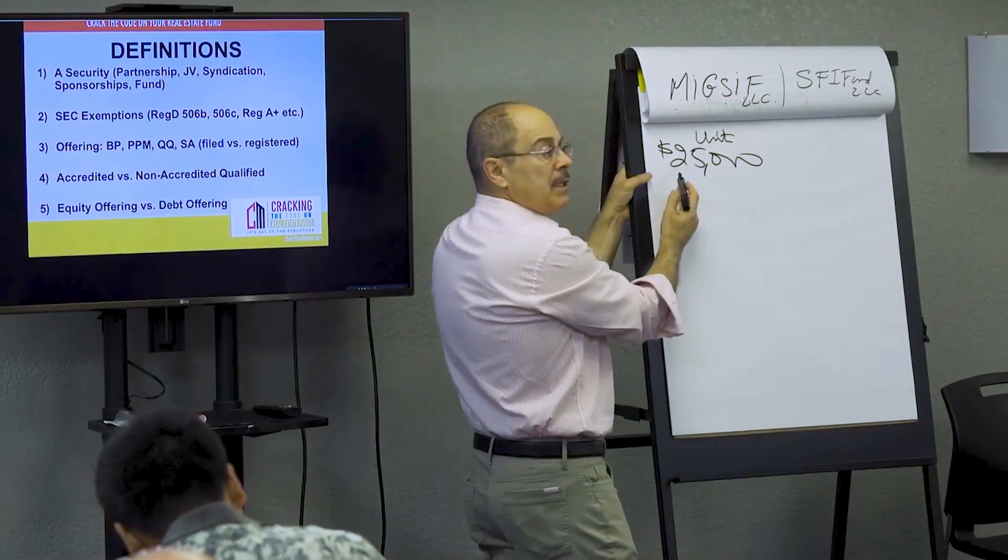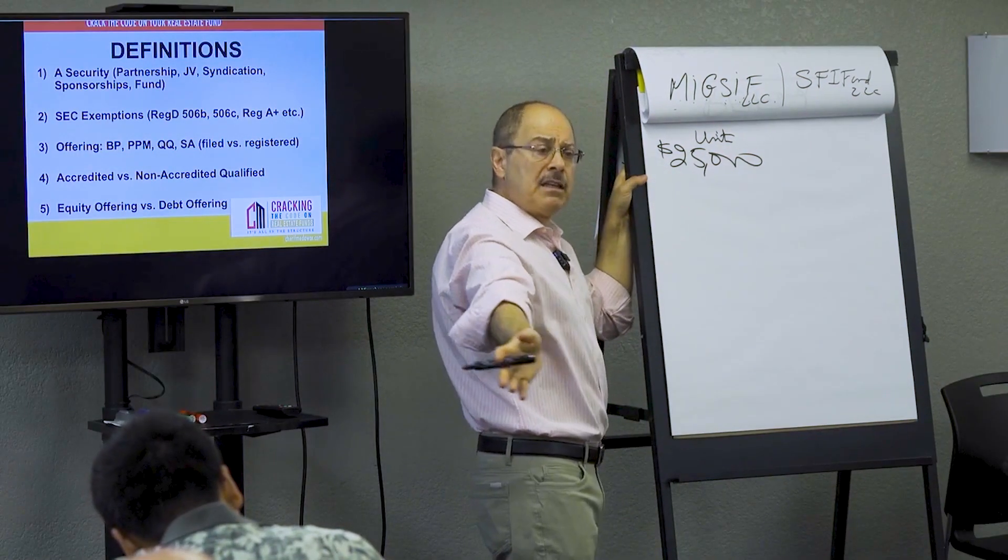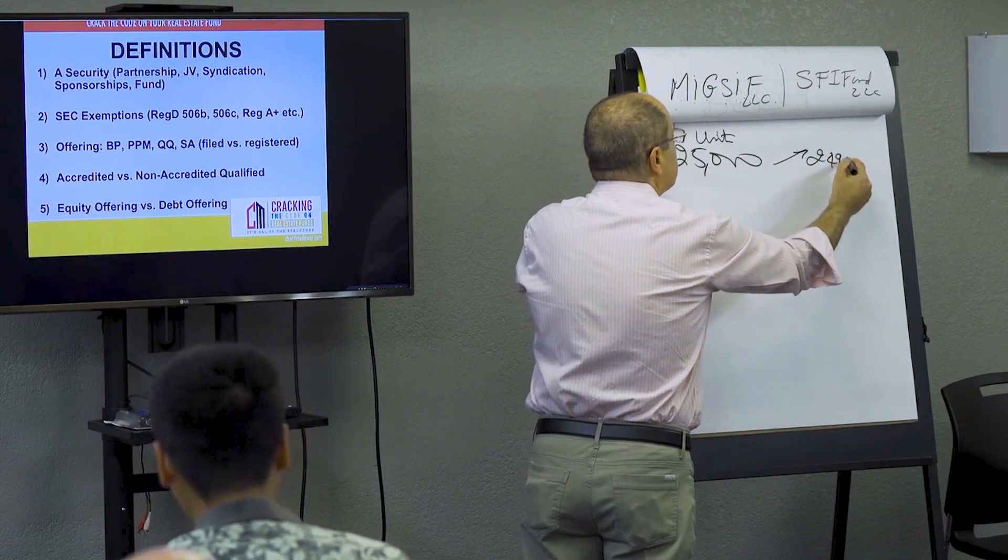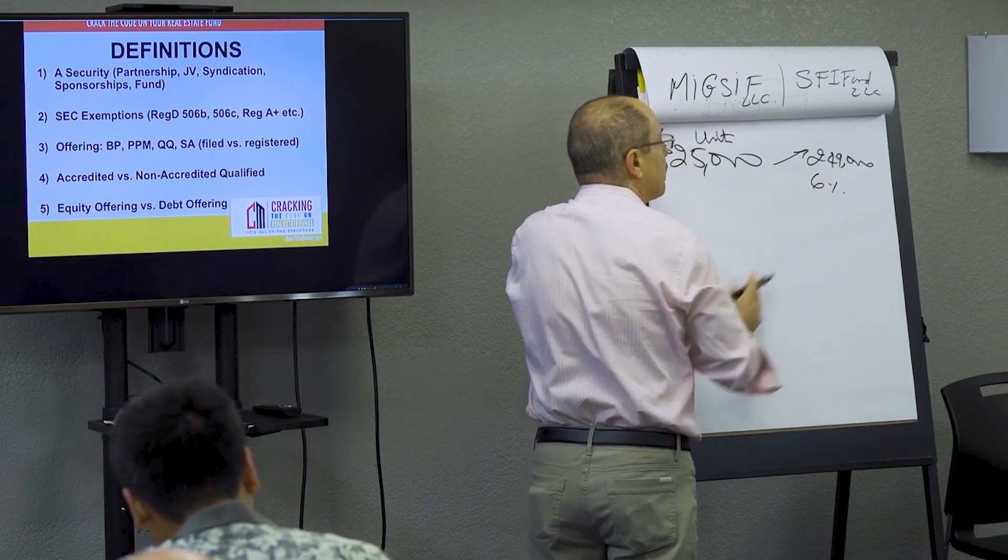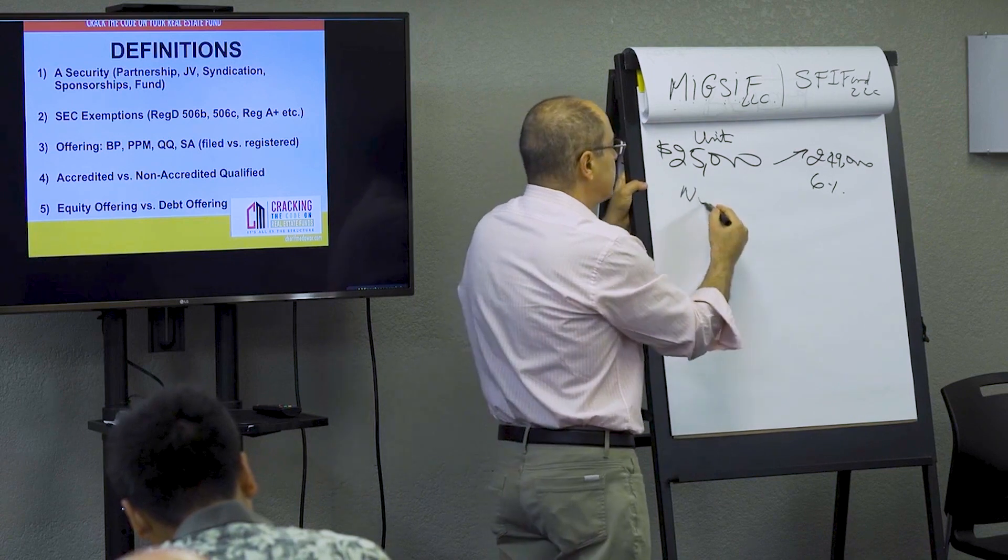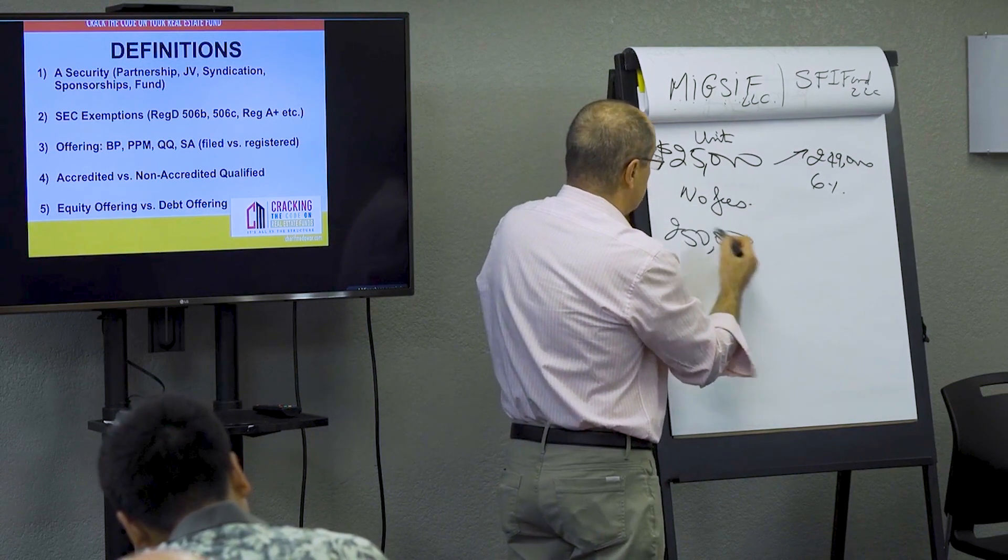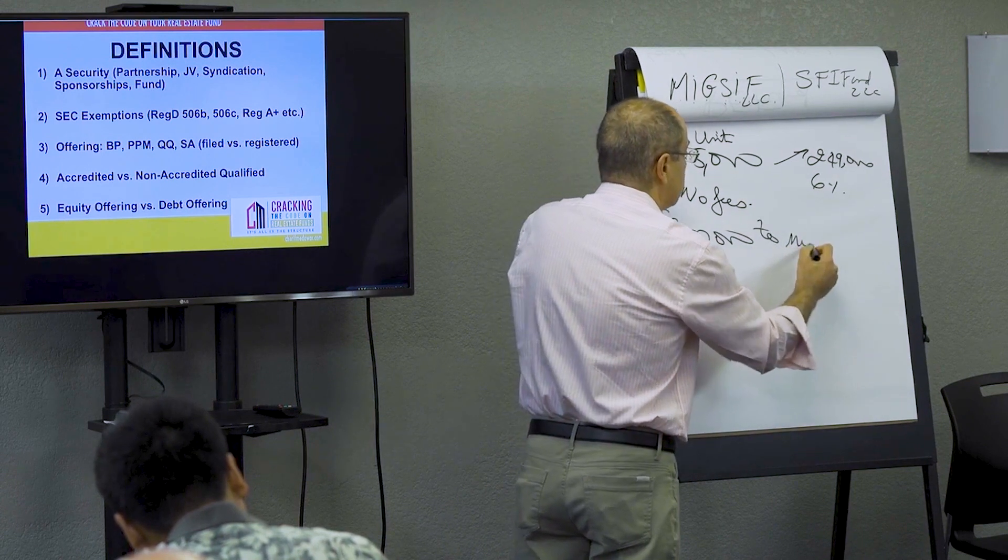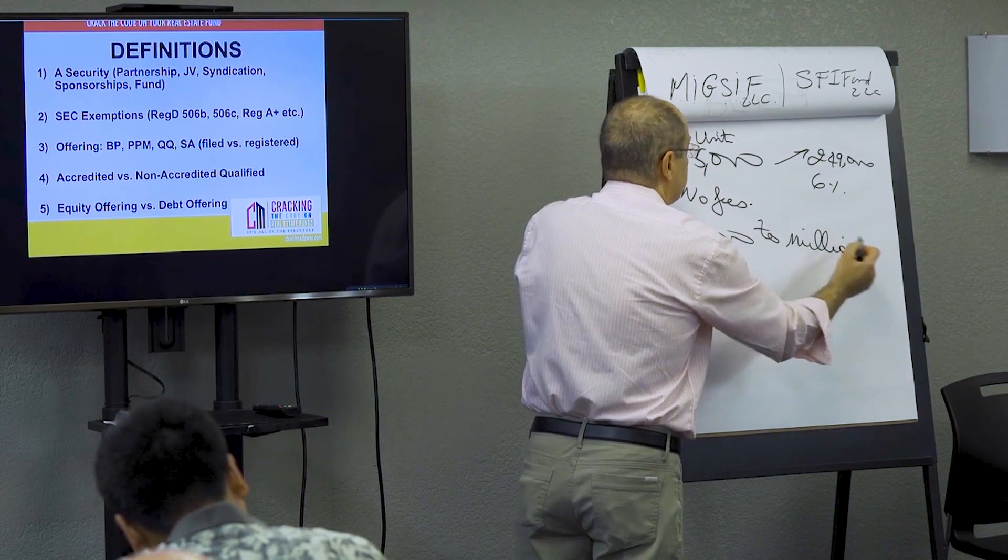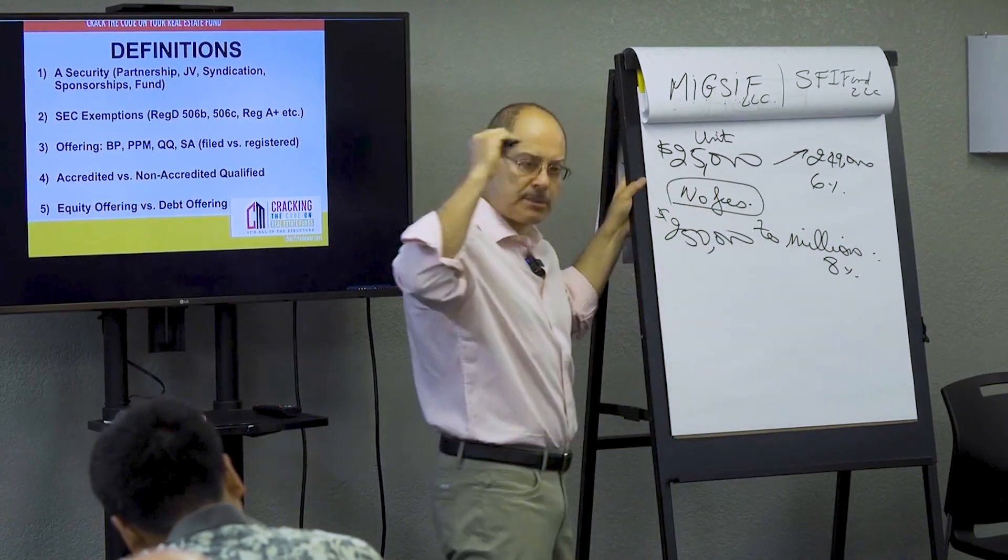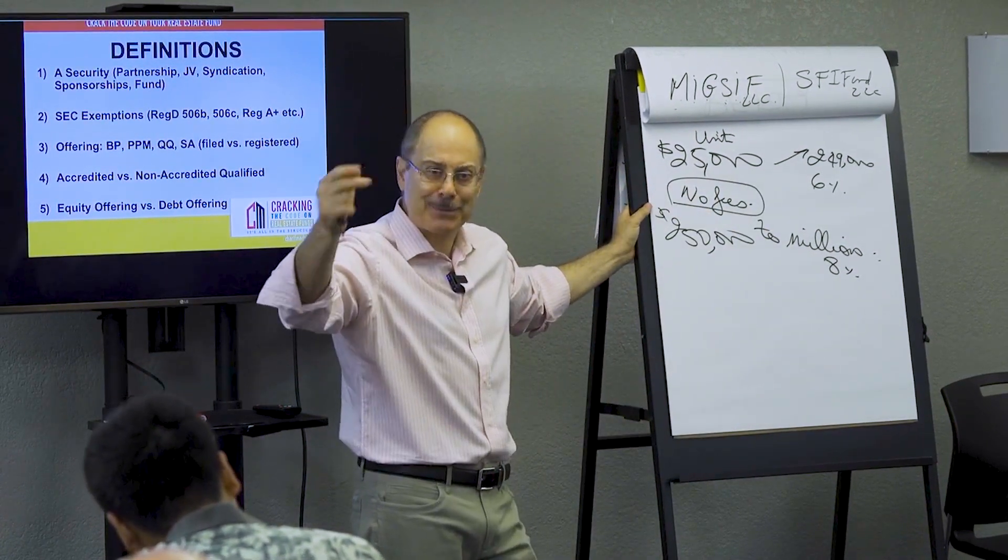So the unit, like people want to invest, I say you can invest as little as $25,000, as much as $249,000. I'll pay you 6% per year. It is no fees. Now, if you invest $250,000 to millions, you get 8%. No fees whatsoever. Don't charge management fee, acquisition fee, disposition fees, no fees.